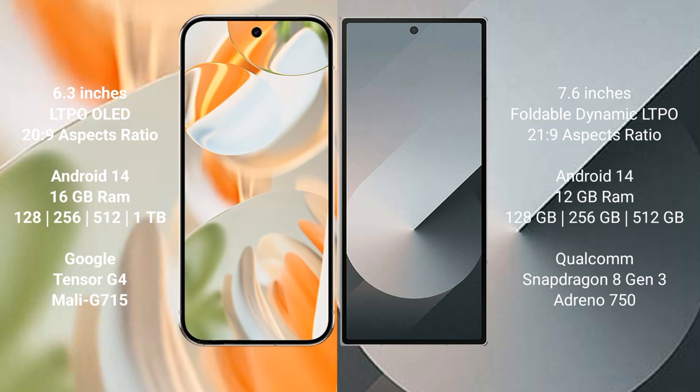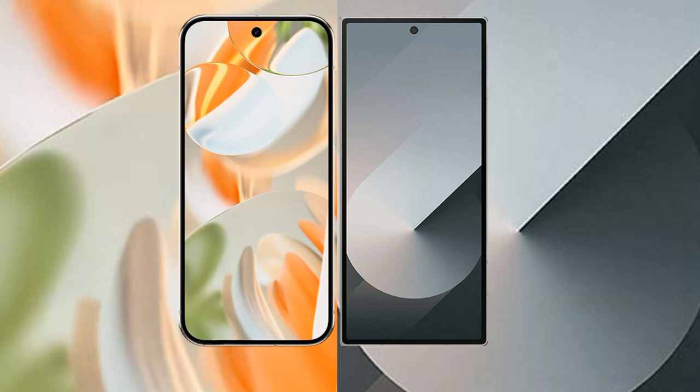Google Pixel 9 Pro comes with 16GB RAM and 128GB, 256GB, 512GB, or 1TB internal storage, powered by the Google Tensor G4 processor with Mali G715 GPU. Samsung Galaxy Z Fold 6 comes with 12GB RAM and 256GB or 512GB internal storage, powered by the Qualcomm Snapdragon 8 Gen 3 processor with Adreno 750 GPU.